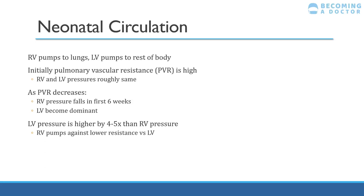A quick way to remember the rough pressures of each cardiac chamber — it's like a square rule. The right atrium is about 5 mmHg. The right ventricle is the square of that — about 25. The left atrium is about double the right atrium, so 10, and the left ventricle is the square of that — about 100. So 25 versus 100, roughly four times as much. That aligns with a normal young person's blood pressure of around 120/80. In neonates, pulmonary vascular resistance is high, so the right ventricle is more dominant than in an adult.